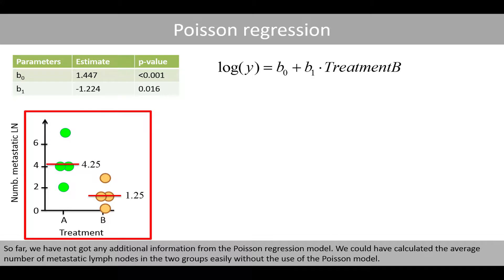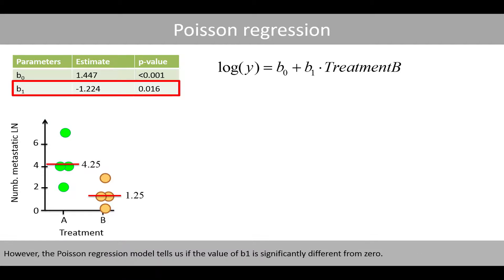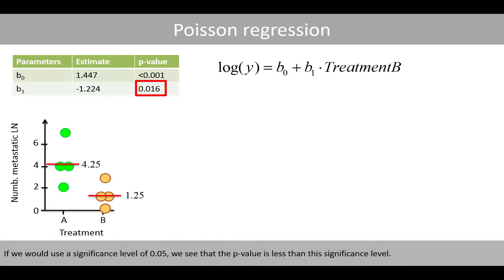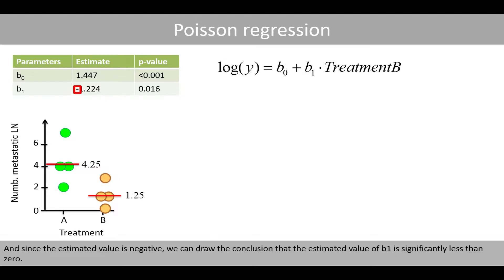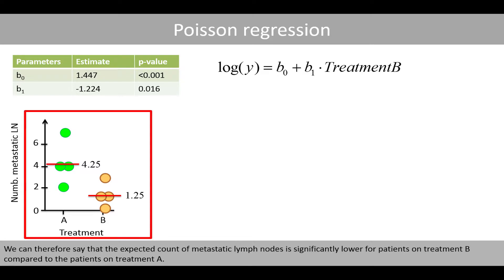So far, we have not obtained any additional information from the Poisson regression model that we could not have obtained by simply calculating the average number of metastatic lymph nodes in each group. However, the Poisson regression model tells us if the value of B1 is significantly different from zero. Using a significance level of 0.05, the p-value is less than this threshold. We can thereby conclude that the estimated value of B1 is significantly less than zero, meaning the expected count of metastatic lymph nodes is significantly lower for patients on treatment B compared to treatment A.